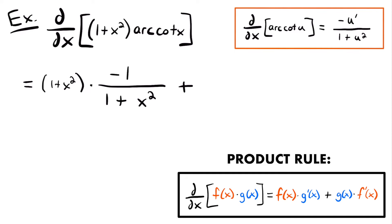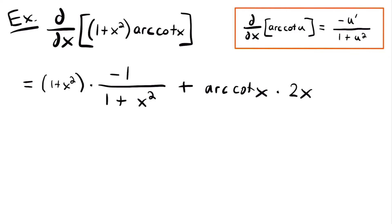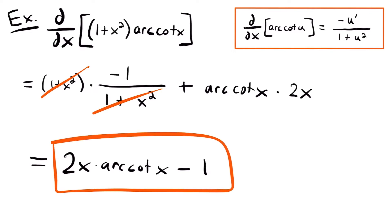We add to that our second function, arccotangent x, times the derivative of the first function. The derivative of 1 is 0 and the derivative of x squared is 2x by the power rule, giving 2x. Simplifying, we notice that (1 plus x squared) appears in both numerator and denominator, so those cancel out, leaving negative 1 plus arccotangent x times 2x. Reordering terms, this equals 2x times arccotangent of x minus 1, and that is the derivative of this function.